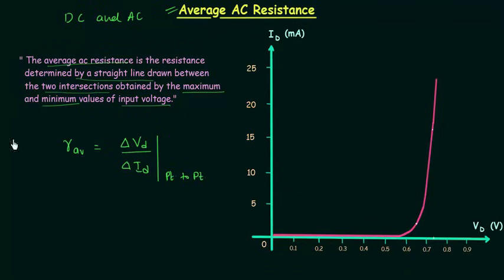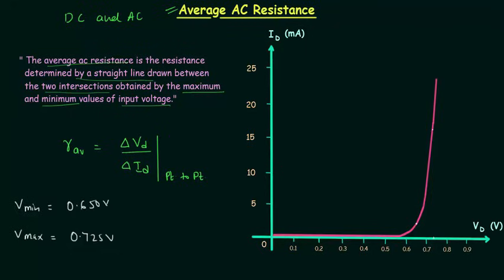Let's say the minimum voltage is equal to 0.650 volts and the maximum voltage is equal to 0.725 volts. We can easily locate these values in this plot. This is 0.650, and when you extend it like this you will have one point, and you can easily obtain the corresponding current.